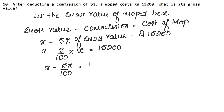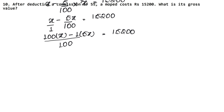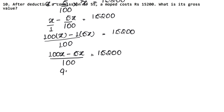X has no denominator so we write 1 under it. Taking LCM of 1 and 100, we get 100. Multiply 100 with X and 1 with 5X: (100X − 5X) / 100 = 15,200. That gives us 95X / 100 = 15,200.